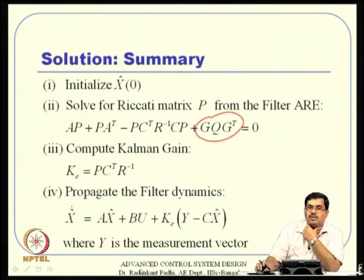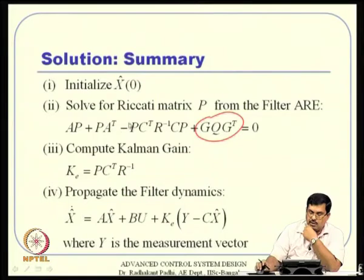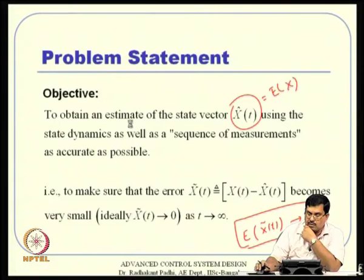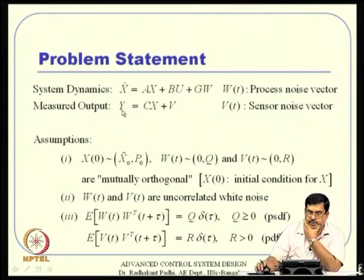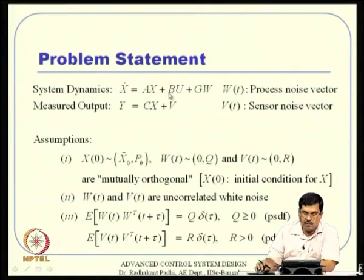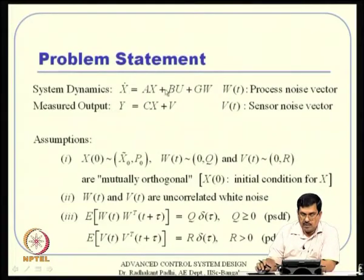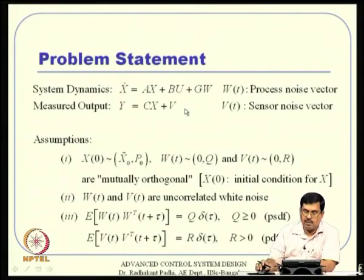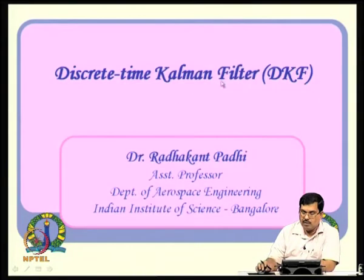In pure continuous-time Kalman filter, the assumption is that sensor measurements are available continuously, which is unrealistic. Since measurements are taken only at discrete points in time, it makes sense to discretize the system equation — using zero-order hold, Euler integration, or any discretization method — and then we have a compatible discrete system. That is what discrete-time Kalman filter theory is about.